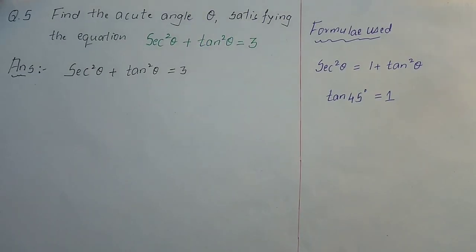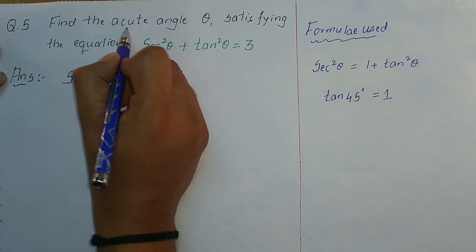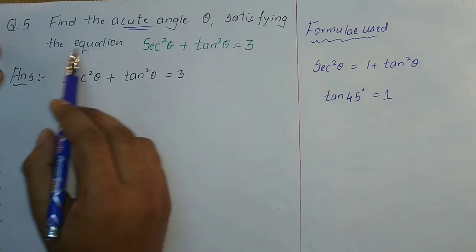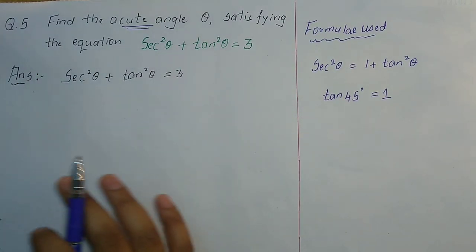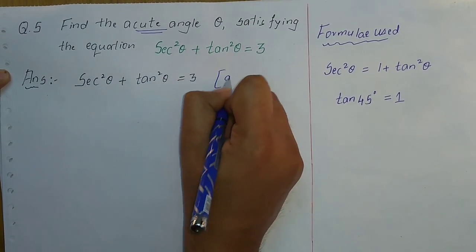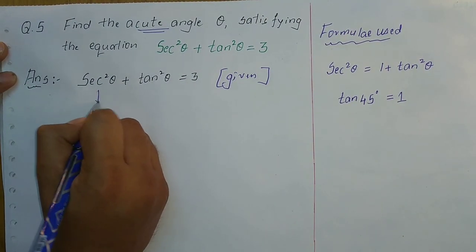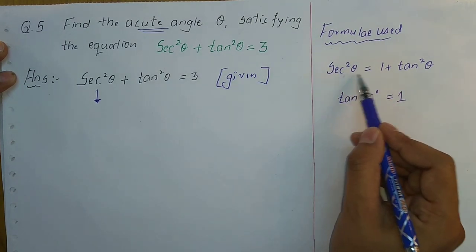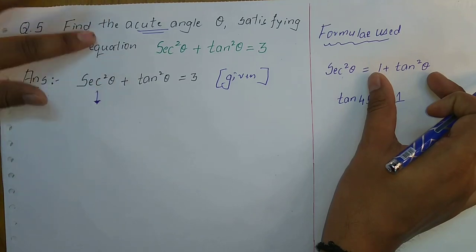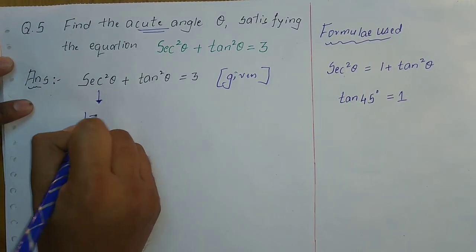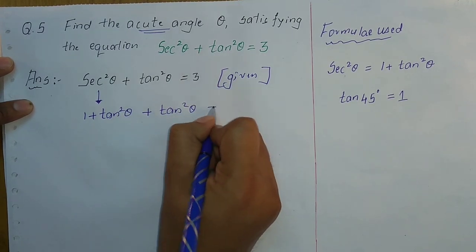So here is the next problem. Find the acute angle θ satisfying the equation sec²θ + tan²θ = 3. We need to find the value of θ. We know that sec²θ = 1 + tan²θ, so we substitute that here.